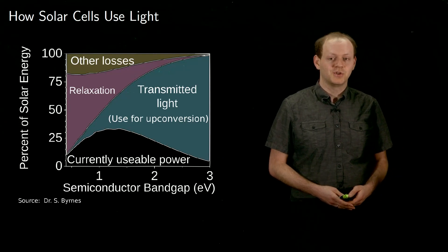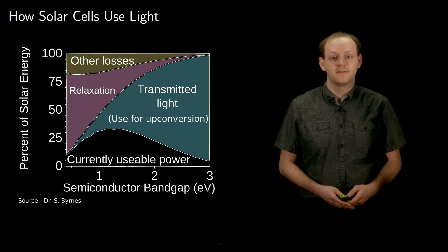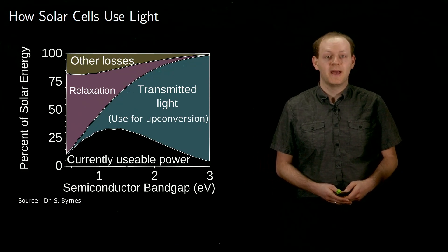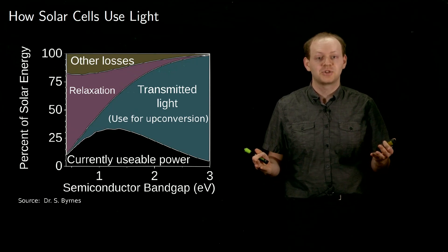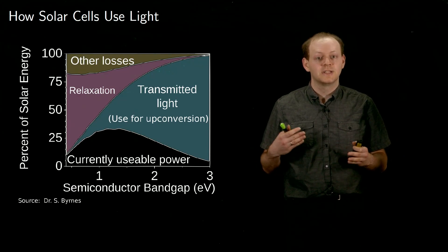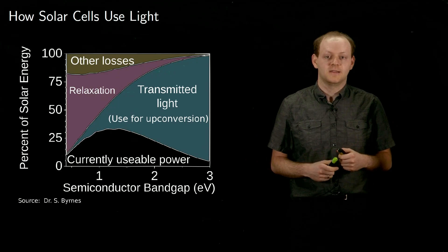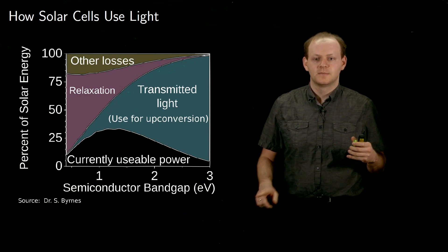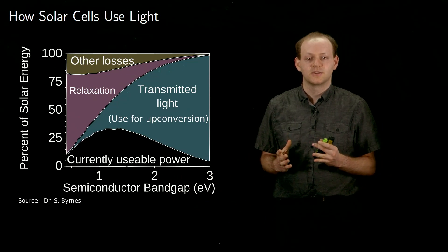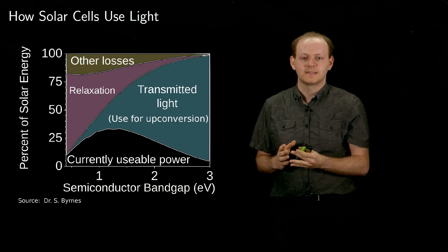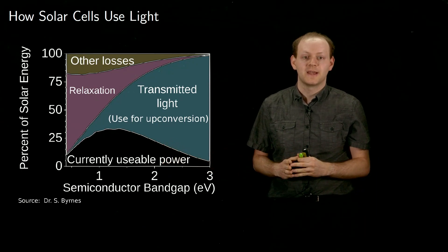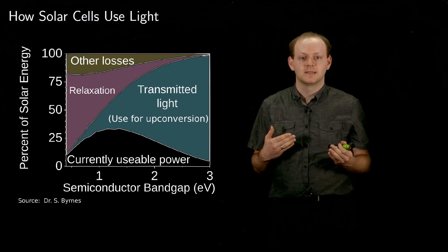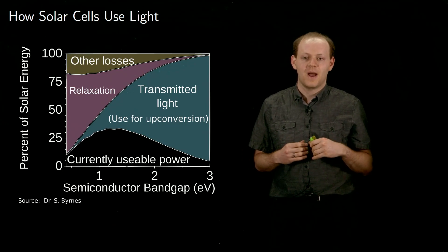The reason we want to study upconversion is that it can improve the efficiency of solar cells. The most important property of a solar cell is the band gap. The band gap determines what light is captured by the solar cell and what light is transmitted, passing through the solar cell and getting lost on the other side. The larger the band gap, shown on the horizontal axis, the more light that is transmitted, shown in blue. The light converted to power is shown in black, and we want to make that as big as possible. If the band gap is too large, too much light is lost because it passes through the solar cell and the amount of power produced is reduced.